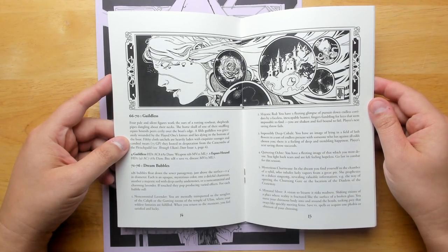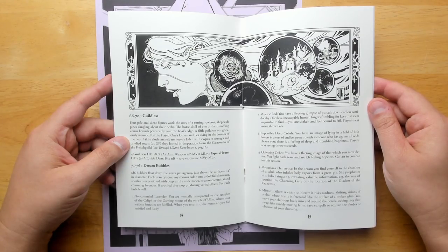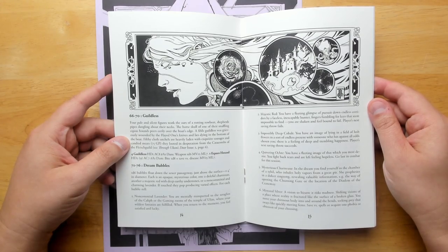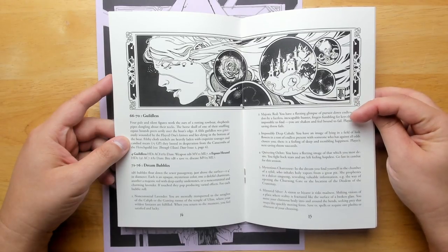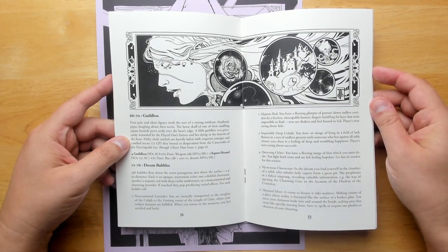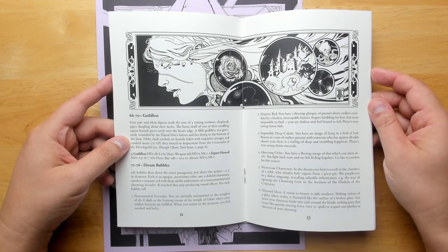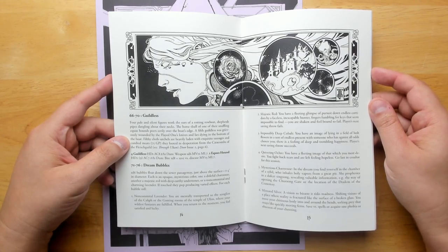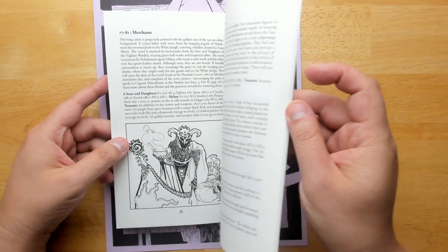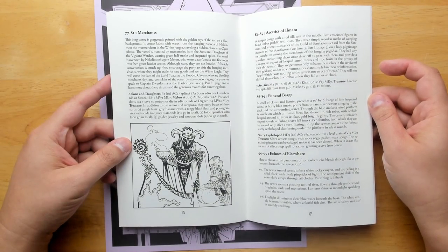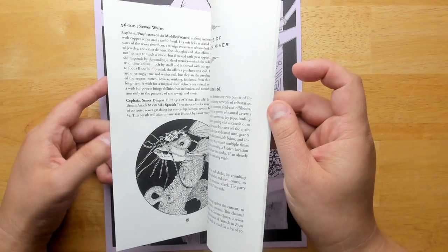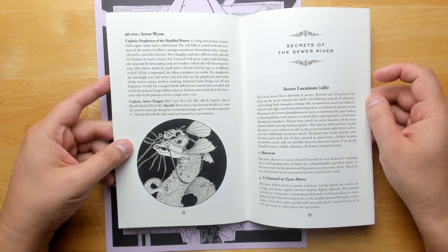Dream bubbles, little bubbles floating down the sewer. And if you pop them, then you get a sudden flash of a dream. For example, a majestic red bubble. If you pop it, you have a fleeting glimpse of pursuit down endless corridors by a faceless, inescapable hunter. Fingers fumbling for keys that seem impossible to find. You are shaken and feel bound to fail. Player's next saving throw fails. You run into some merchants, some ascetics, echoes of elsewhere, and a huge sewer worm.